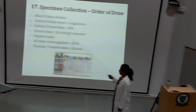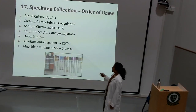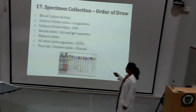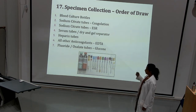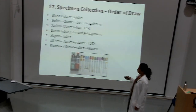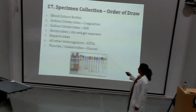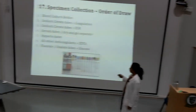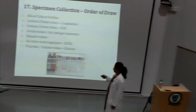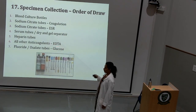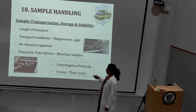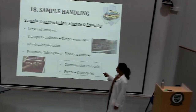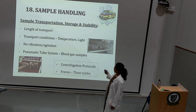If a single patient has been asked for multiple tests, follow the order of draw. Initially, if blood culture is requested, transfer the very first amount of blood to the blood culture bottles, followed by coagulation studies and ESR, then the serum tube (red top tubes), then heparin tubes, then all other anticoagulants, and finally the gray top tubes for estimating glucose. Once you collect the blood sample, ensure proper transportation, storage, and stability.